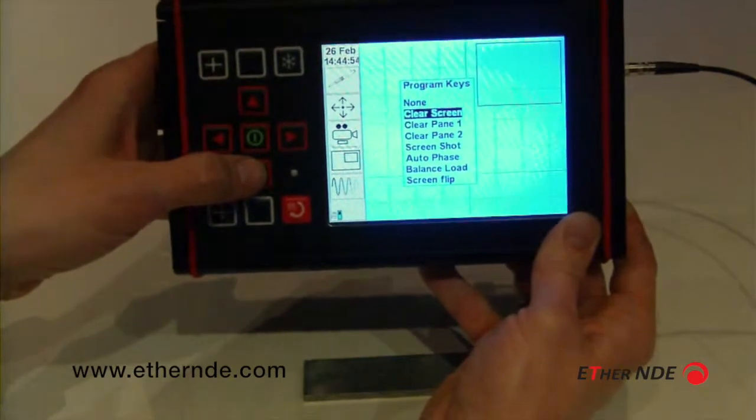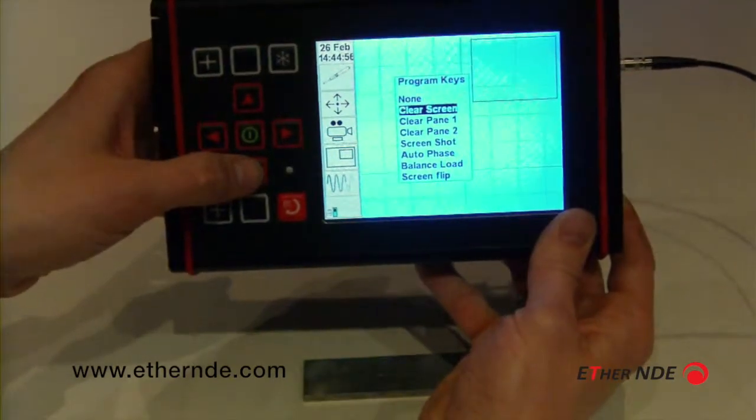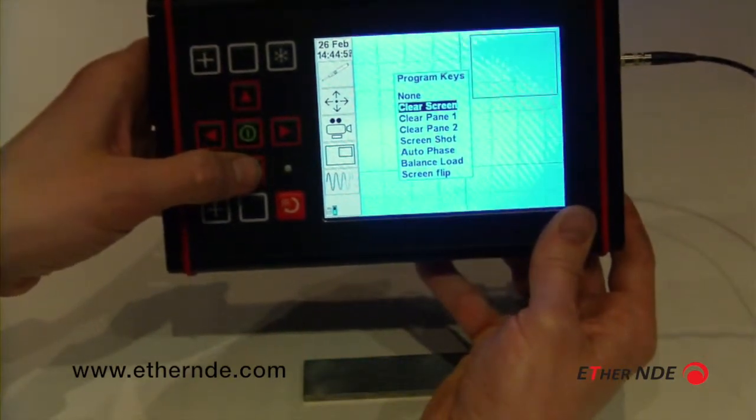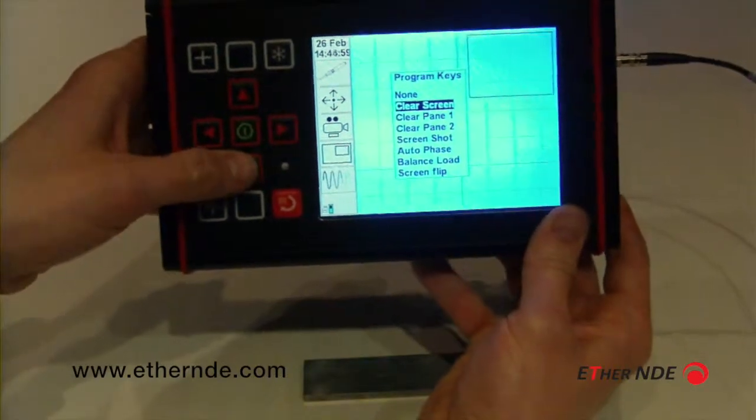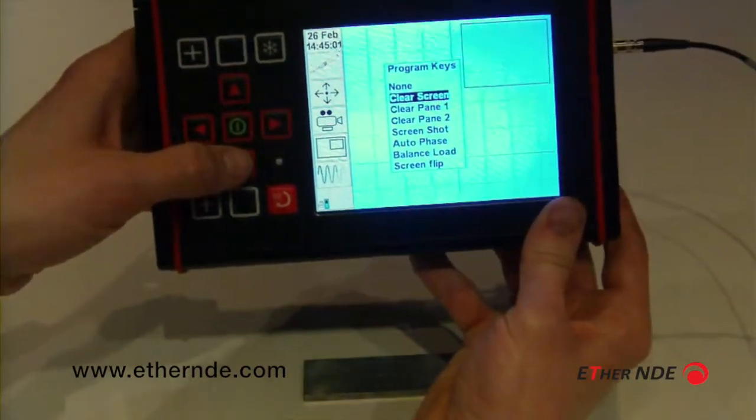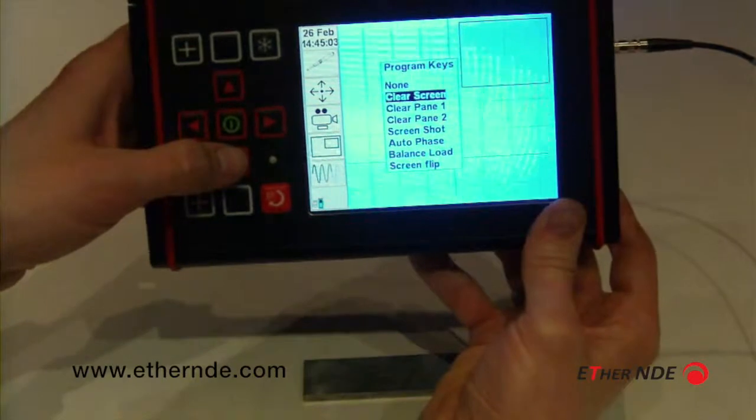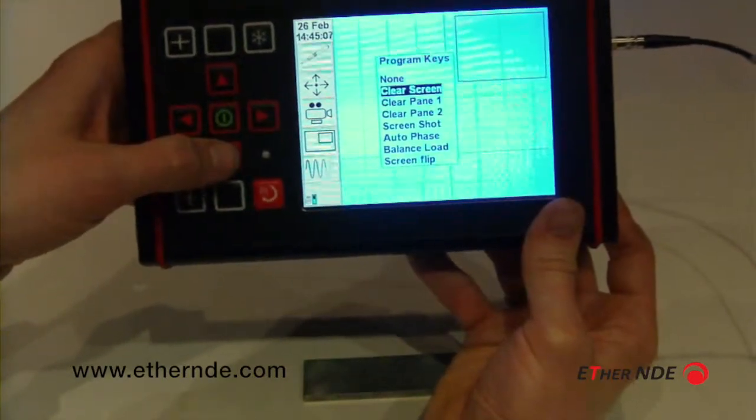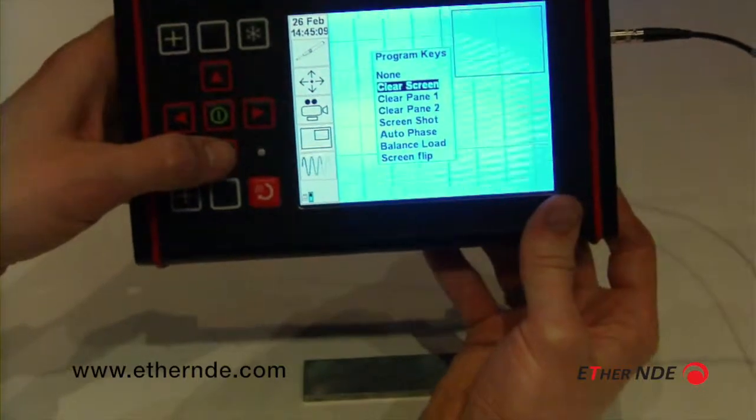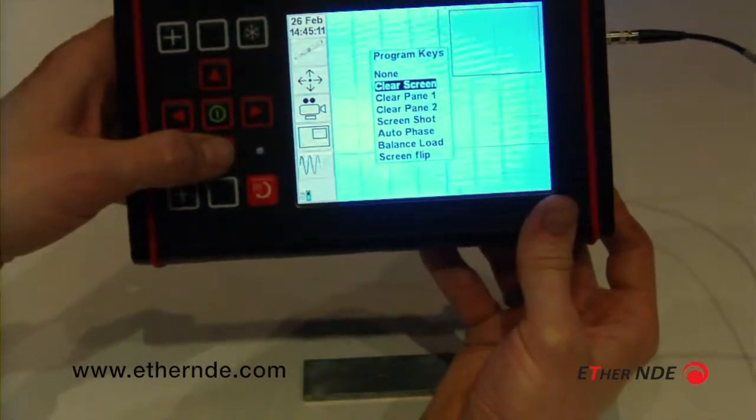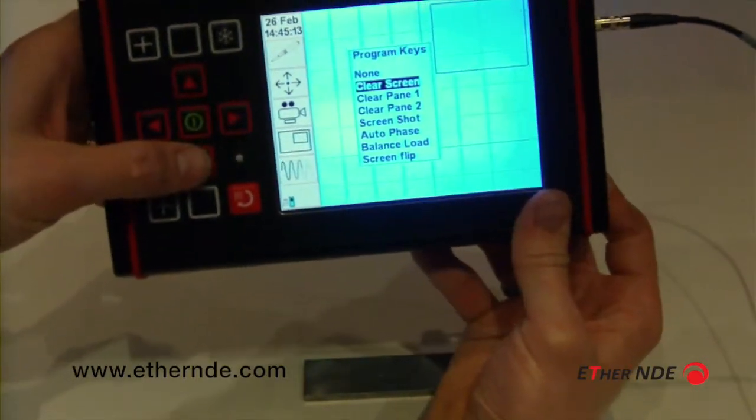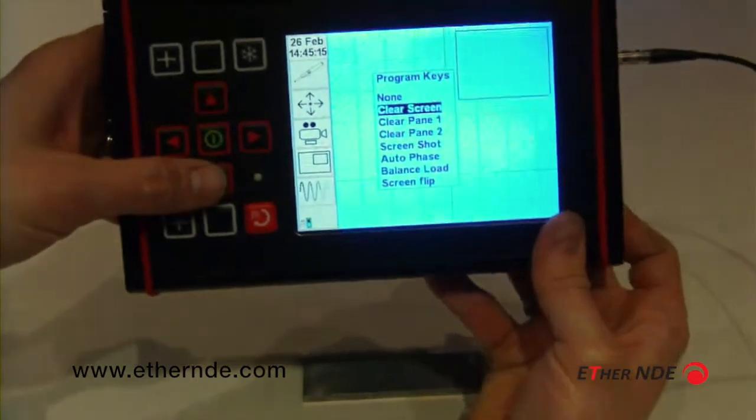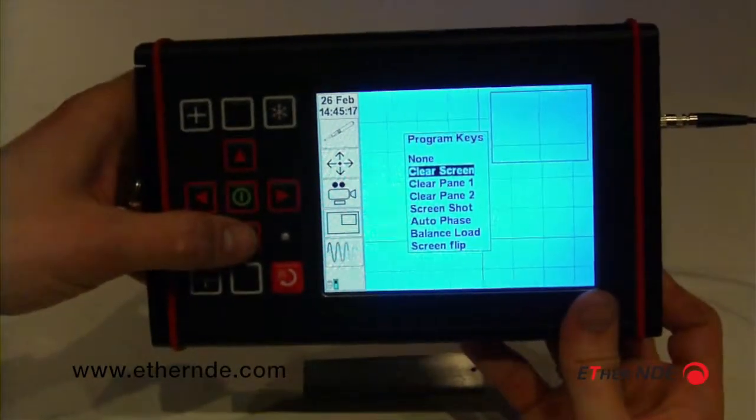Some of them are reasonably self-explanatory: clear screen, clear just pane one, clear just pane two. We have the ability to take screenshots, these are then saved on the micro SD card and can be extracted later. We have an auto phase feature on our instrument, so the button can be programmed to access the auto phase. Auto loads can be used and also screen flip.